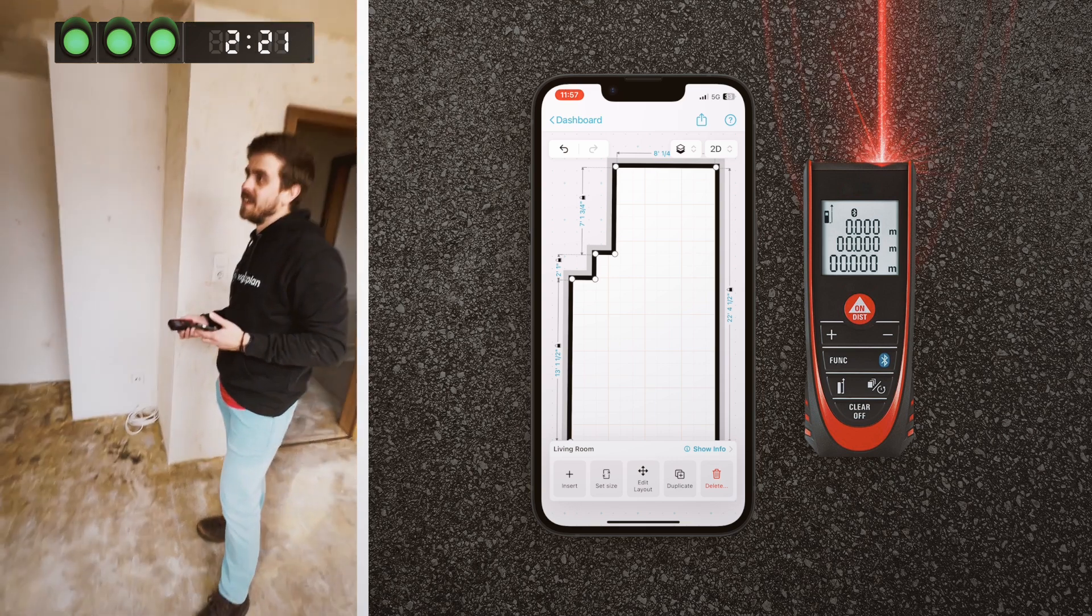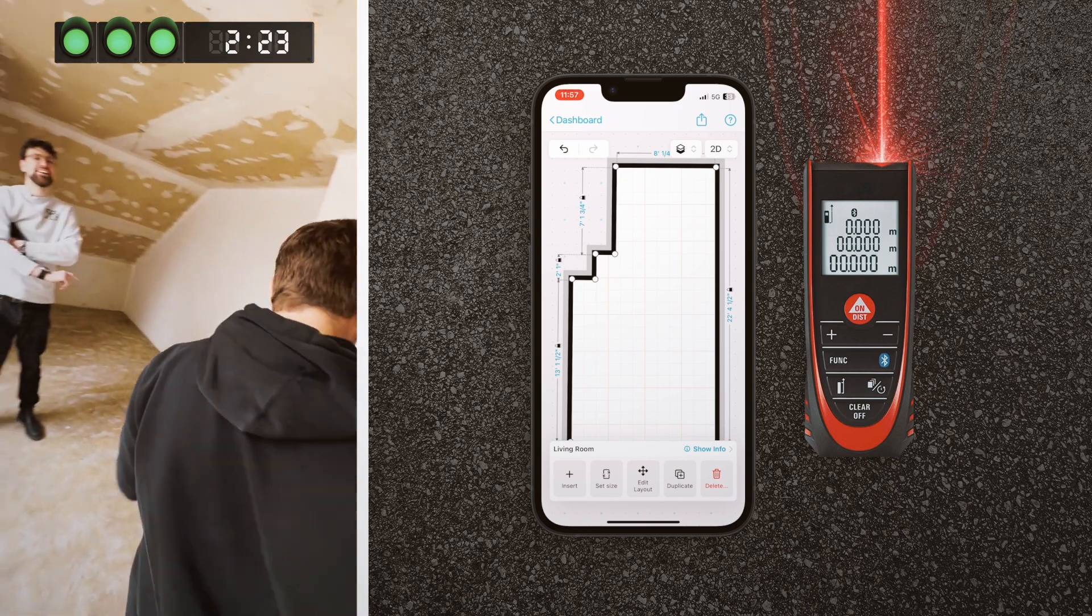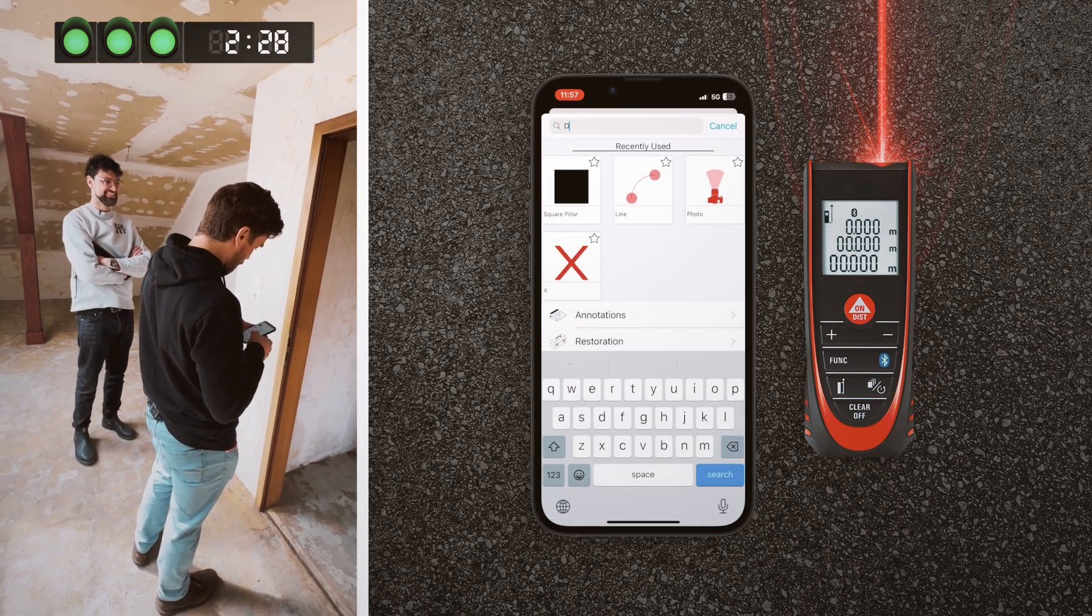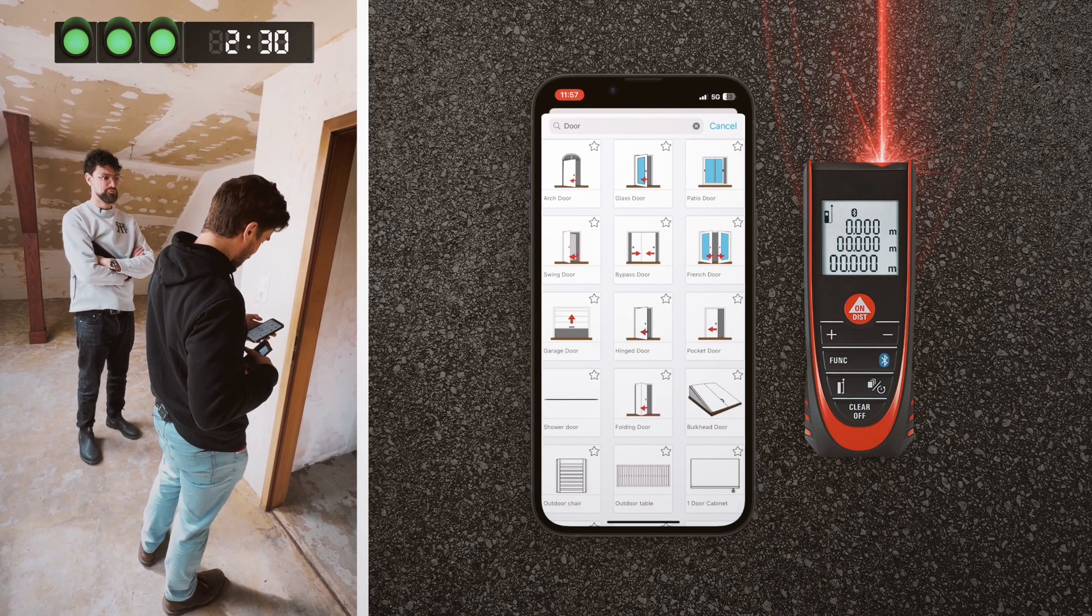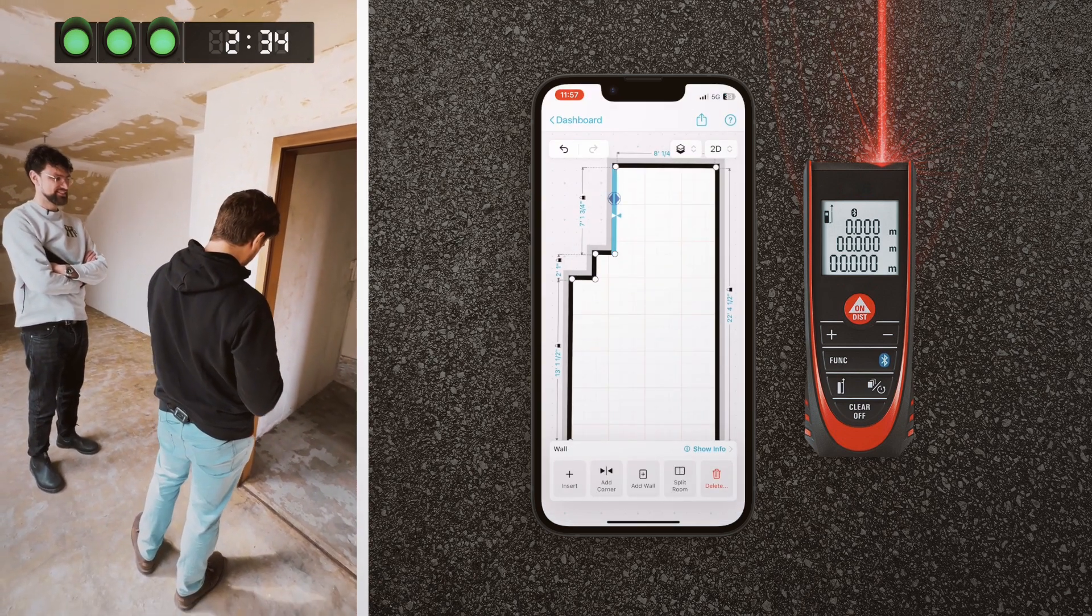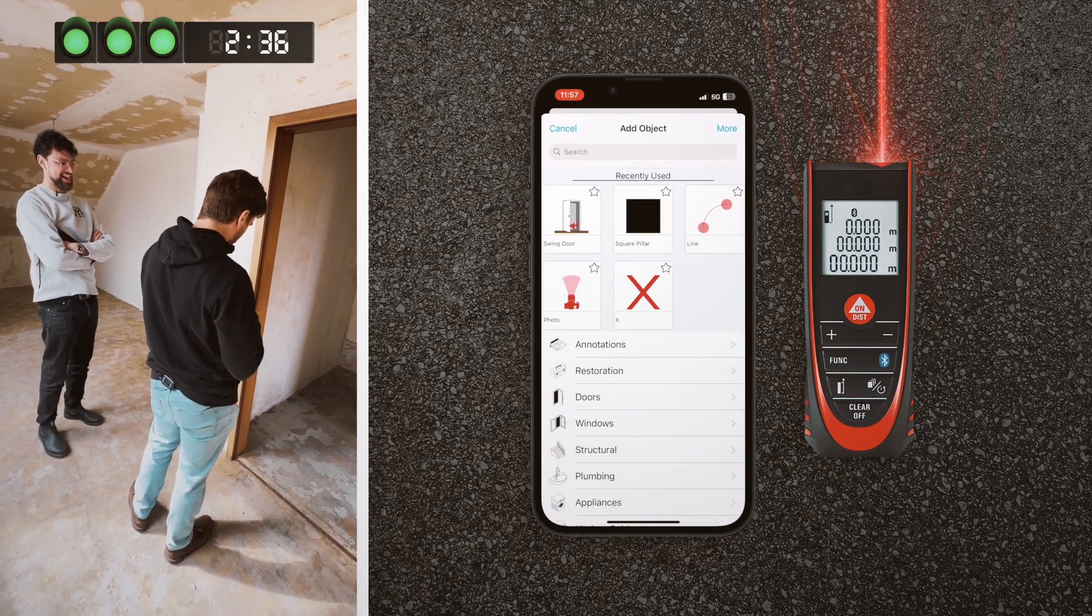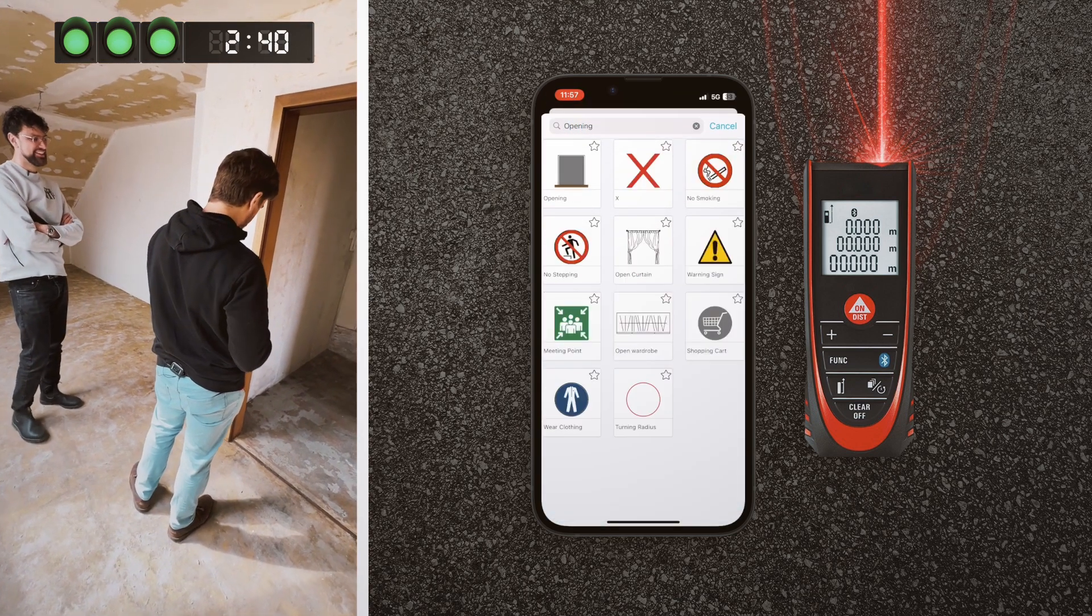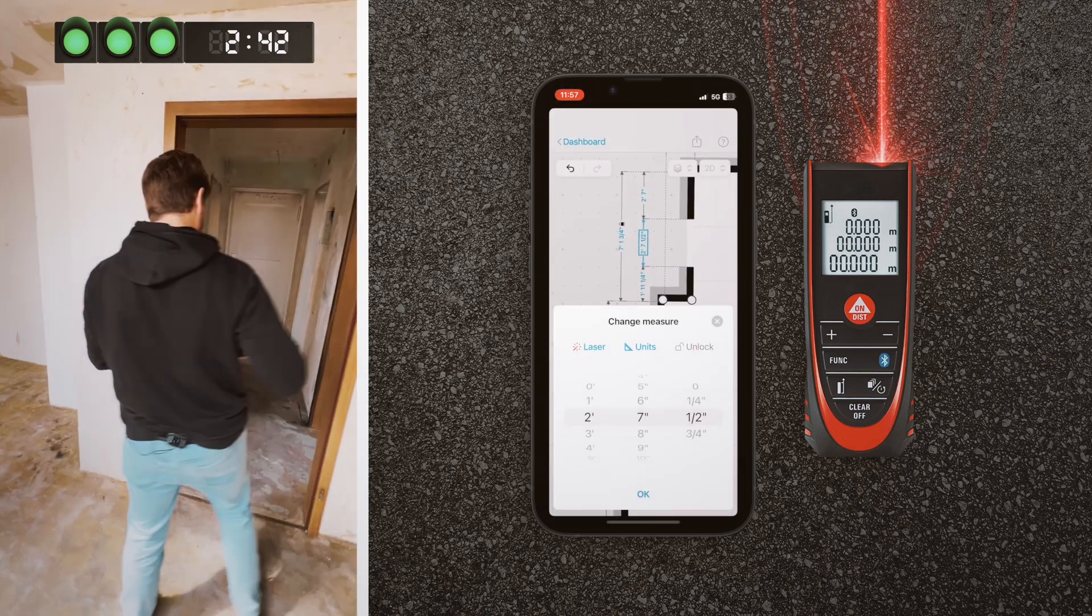But you forgot the door. I did forget the door. So let's go ahead, let's add a door. The challenge intensifies. Oh that's the wrong door type. See, look, now I'm really slowing down my time. So let's do an opening here. Now measure this.